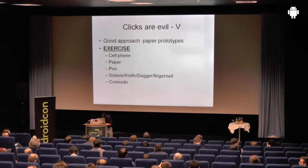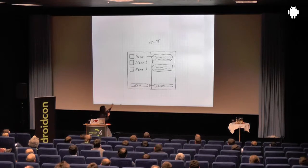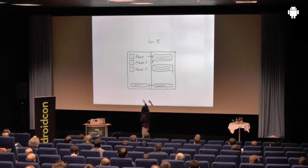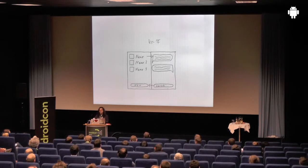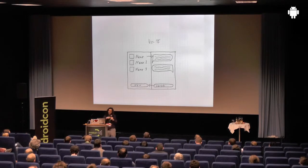When it comes to minimizing clicks, there is a very classic approach: the paper prototype. Essentially, you draw the widgets of the application form by form, and then you use the paper stack to simulate clicking. Every piece of paper is one form, and then you sit down with a friend who uses this stack to use the application. Then you think about how you can optimize clicks away.